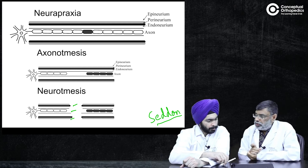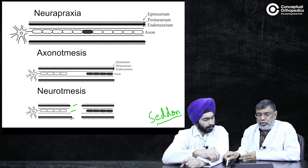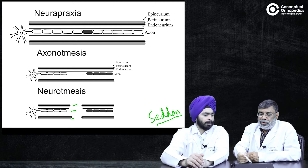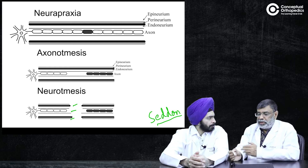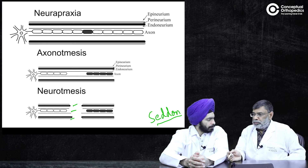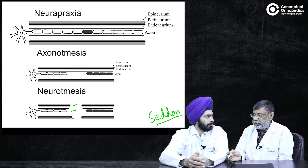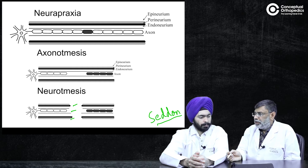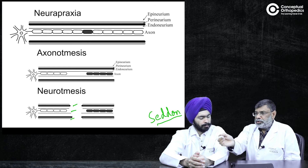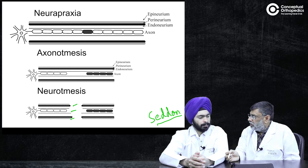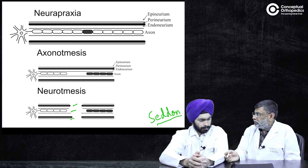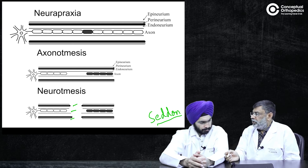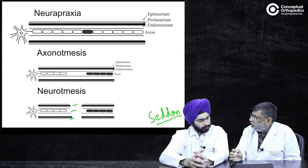What happens when you get nerve damage? If you've got just neuropraxia, it could be as simple as you and me sitting in this chair for half an hour and then getting paresthesia in our feet — tingling and numbness, your foot is asleep — and you stand up, walk, and just recover. That is neuropraxia. That can happen for a few minutes, a few days, or a few weeks. And that is because there is no axonal damage there.